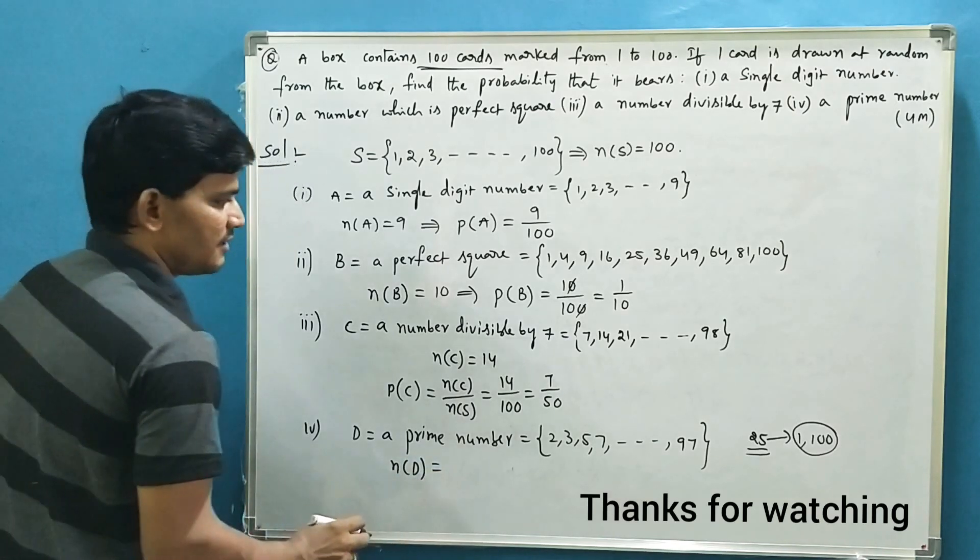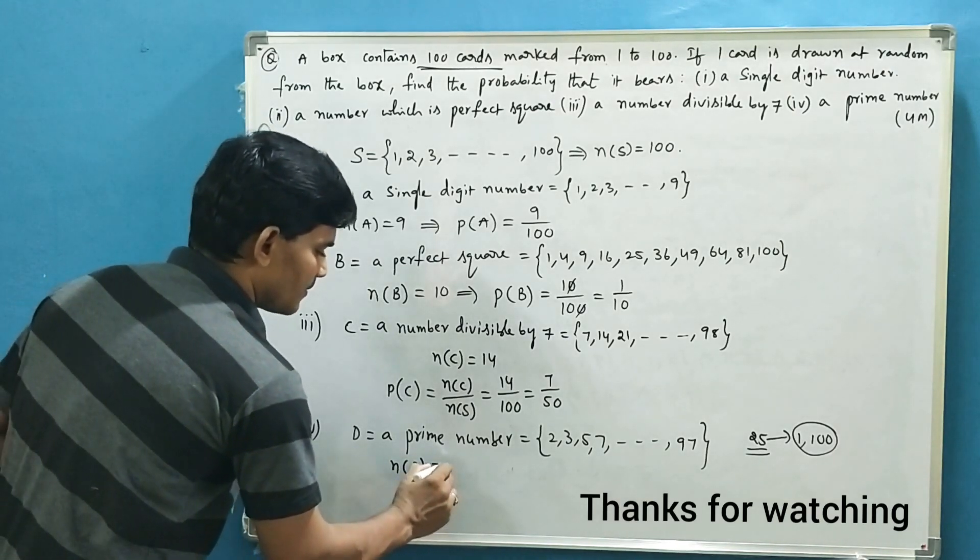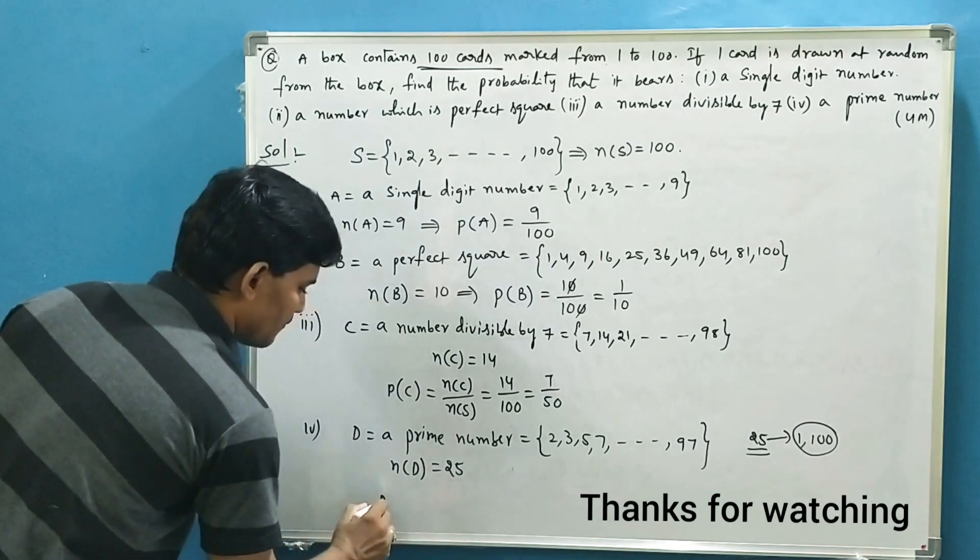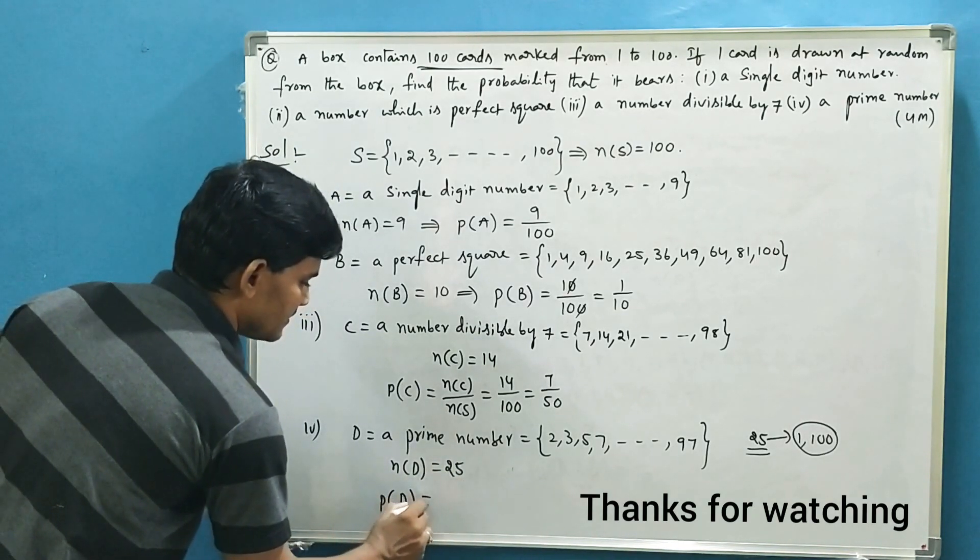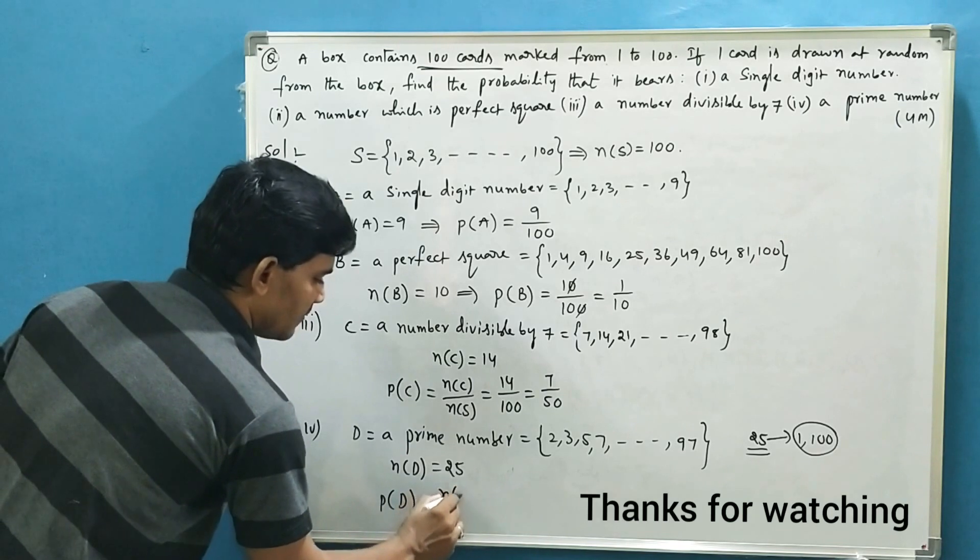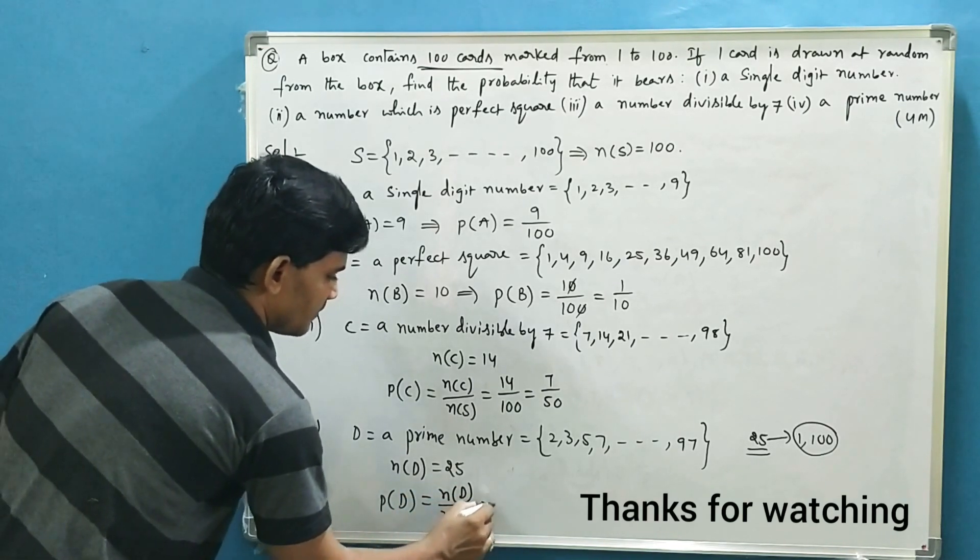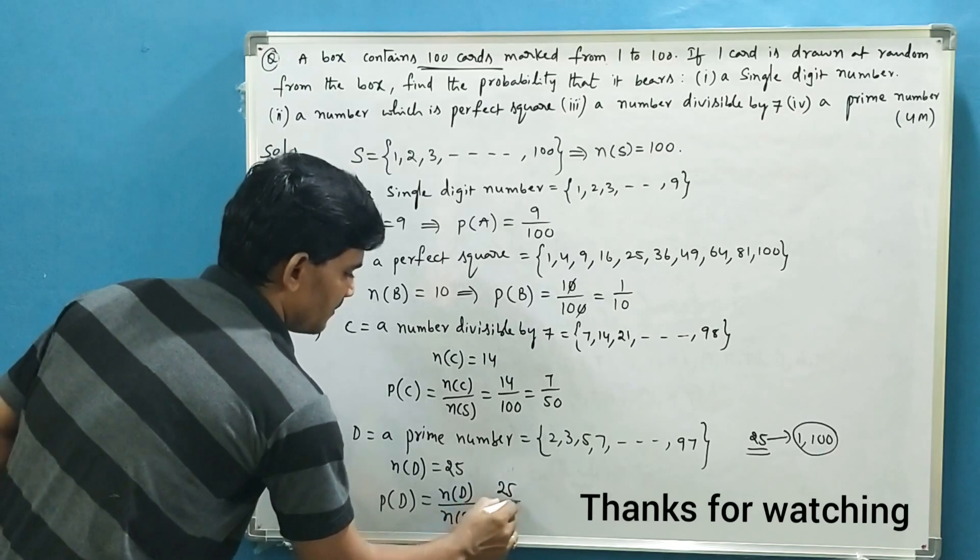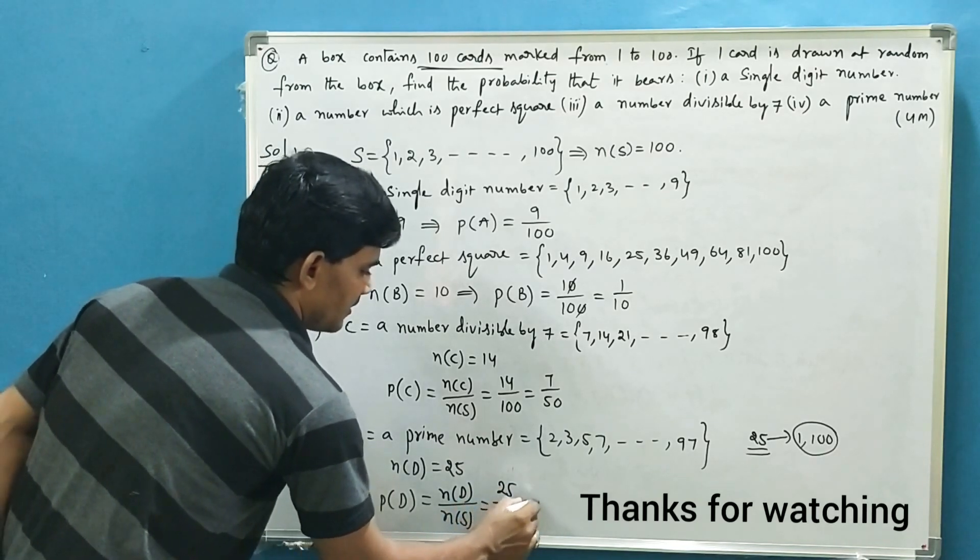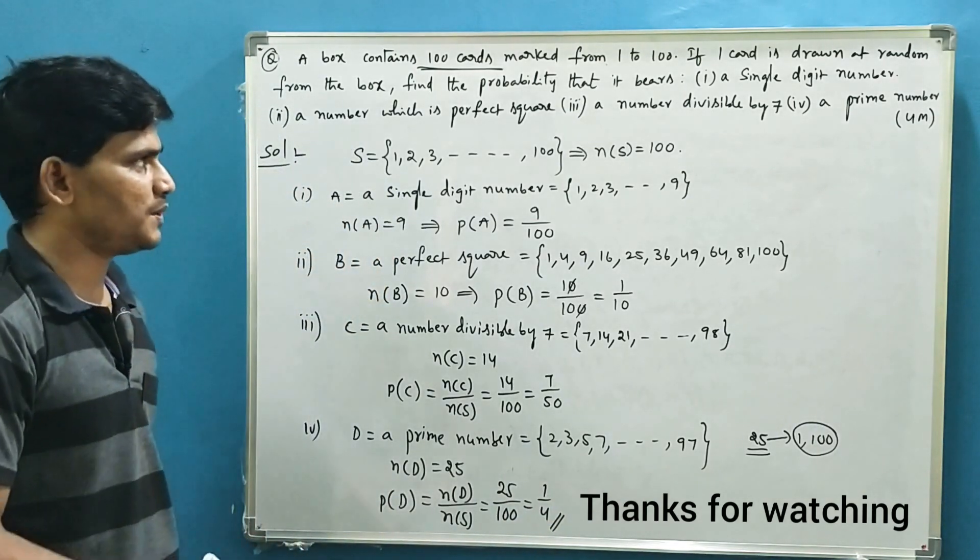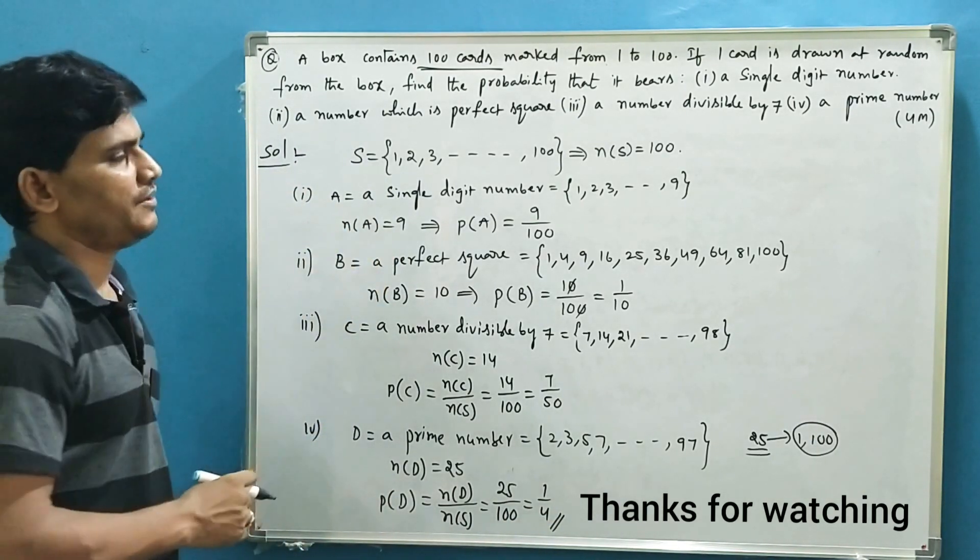The prime numbers from 1 to 100 are 25. So probability of event D, getting a prime number, is n(D) by n(S), that is equal to 25 prime numbers out of 100, which means 1 by 4. So this is how we will write the probabilities of the required events.